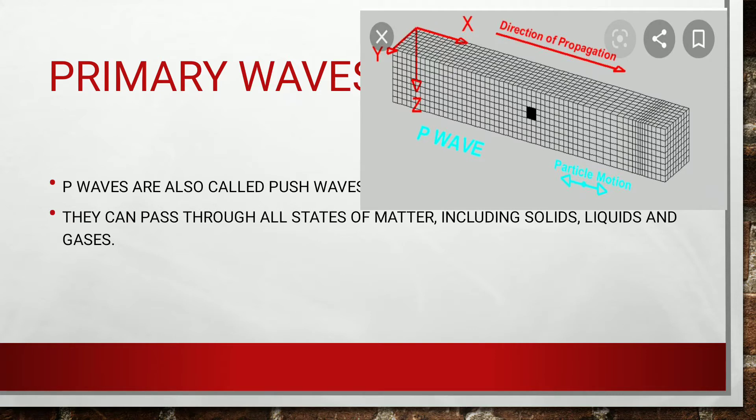Primary waves are also known as push waves. They can pass through all states of matter including solids, liquids, and gases. These waves are the first earthquake waves recorded on a seismogram.